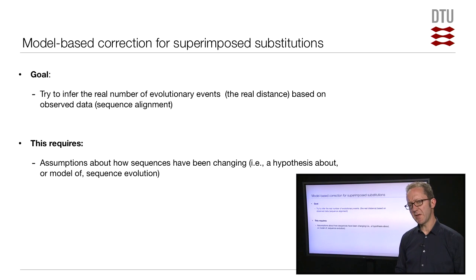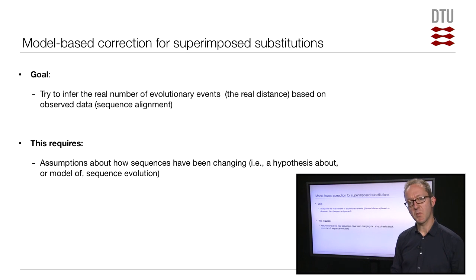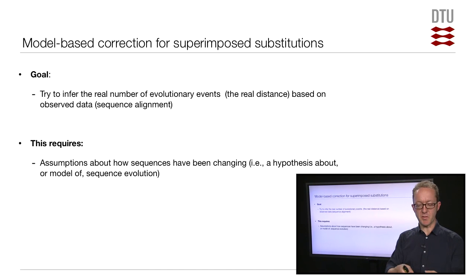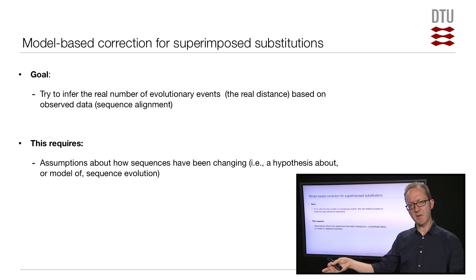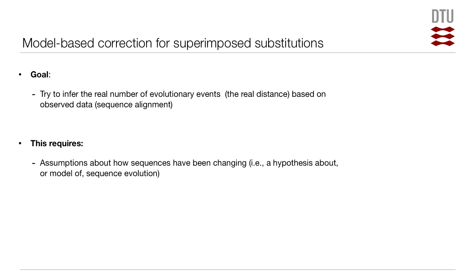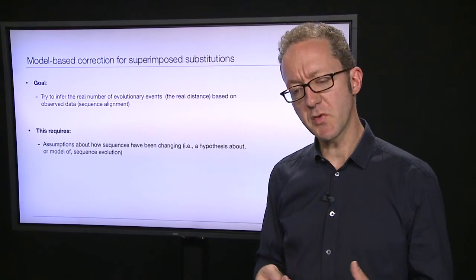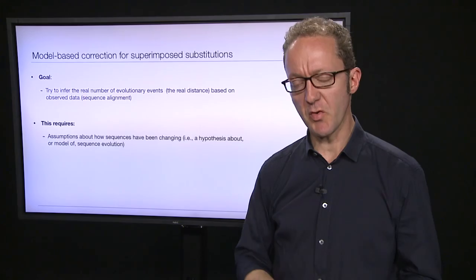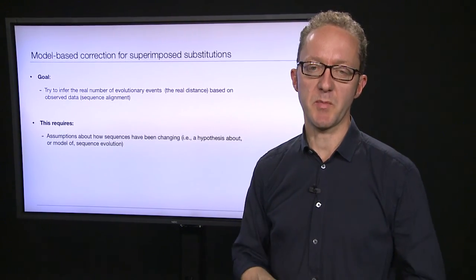To do that, we need to make some assumptions about how sequences are changing — a hypothesis, or what I call a model, of how the sequences are evolving. For instance, it matters whether all sites are hit with the same probability or whether some sites are more likely to mutate than others. It also matters if A-to-C mutates at a different rate than A-to-T. Based on those assumptions, we can think mathematically about the relationship between observed and expected differences.